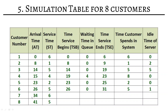Customer 7 arrives at minute 34. Service begins immediately at 34. Waiting time is 0. Service lasts 6 minutes, ending at 40. Time in system is 6 minutes. The server was idle between 31 and 34, so idle time is 3 minutes. Customer 8 arrives at minute 41. Service begins immediately at 41. Waiting time is 0. Service lasts 5 minutes, ending at 46. Time in system is 5 minutes. The server was idle between 40 and 41, so idle time is 1 minute.